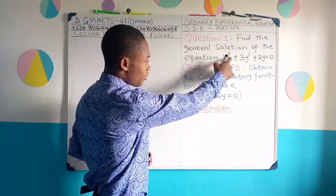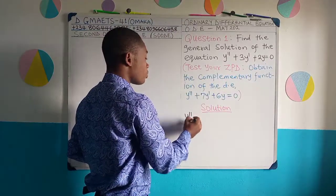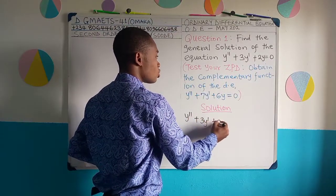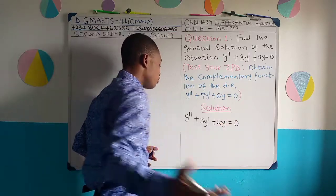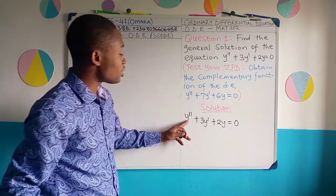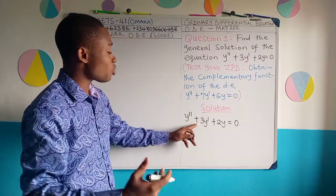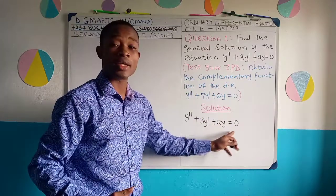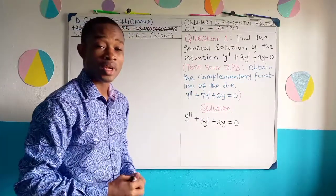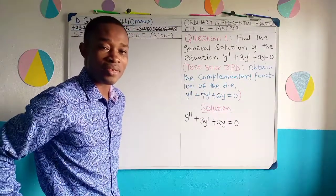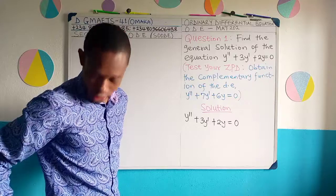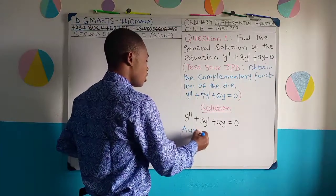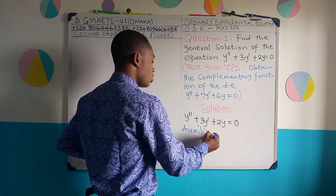The question given to solve is y'' + 3y' + 2y = 0. This means d²y/dx² + 3 dy/dx + 2y = 0. Now, let us pick the auxiliary equation out. Let's bring out the auxiliary equation.